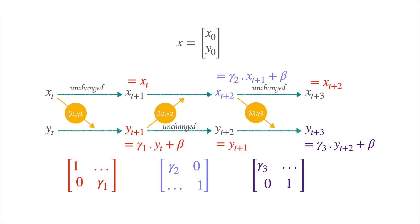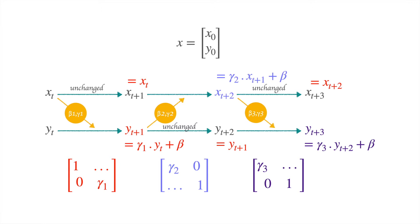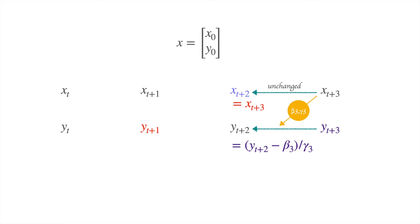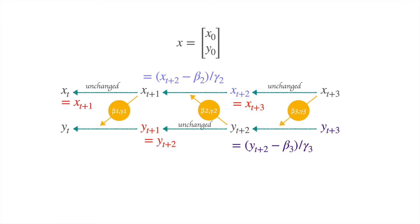The determinants of these Jacobians are equal to the product of values along the main diagonal — in this case, gamma_1, gamma_2, gamma_3, and so on. The sum of log determinants of these Jacobians is going to be equal to the sum of the log gammas. For the inverse: we start with x_{t+3}, keep it unchanged so x_{t+2} equals x_{t+3}, and x_{t+3} gives us beta_3 and gamma_3, which is used by y_{t+3} to give y_{t+2}. Then y_{t+2} gives beta_2 and gamma_2, which is used by x_{t+2} to give x_{t+1}, and so on. This gives us a very easy way to do forward as well as reverse operations, which are invertible and very easy to calculate.